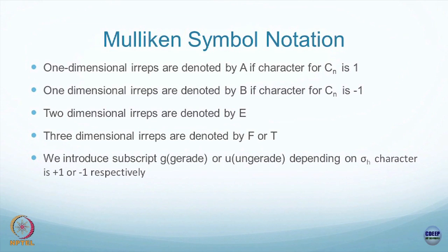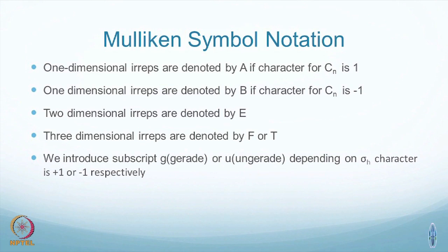Those are the irreps, and you denote a one-dimensional irrep either by the letter A or the letter B. The letter A is used if the character of the n-fold principal axis rotation element C_n is plus 1; if the character is minus 1, you use the letter B.